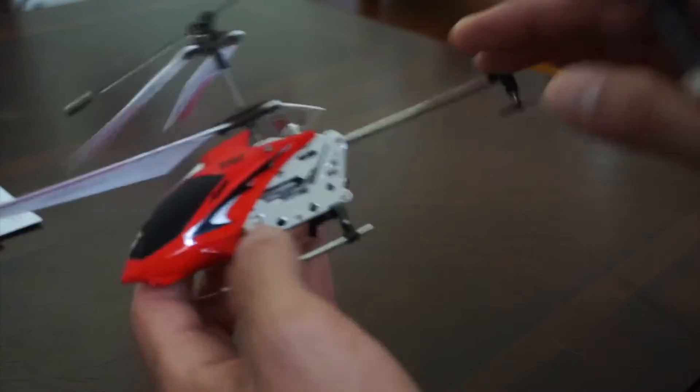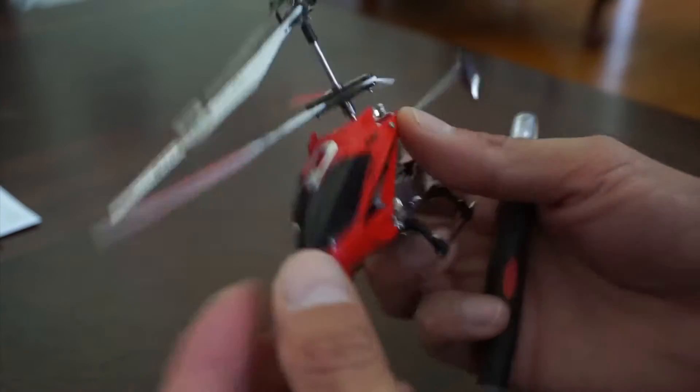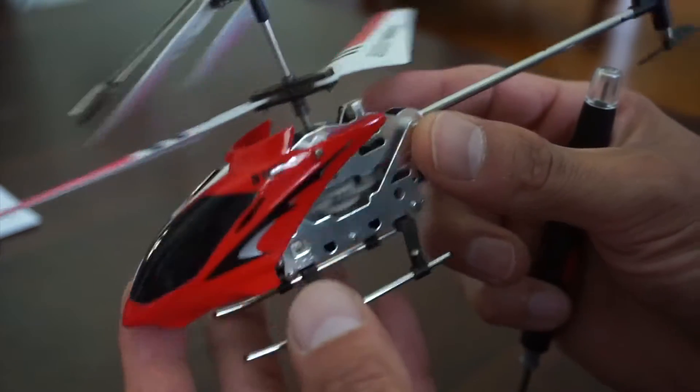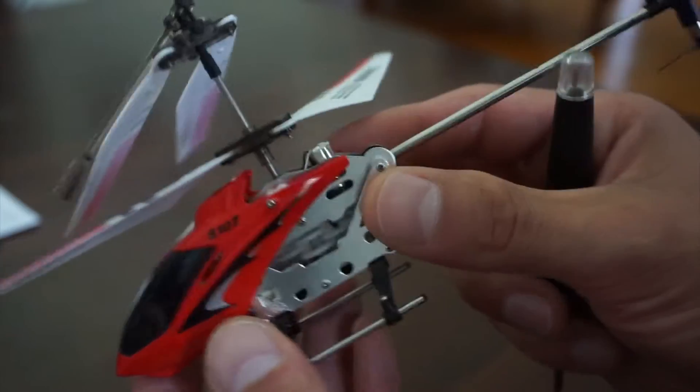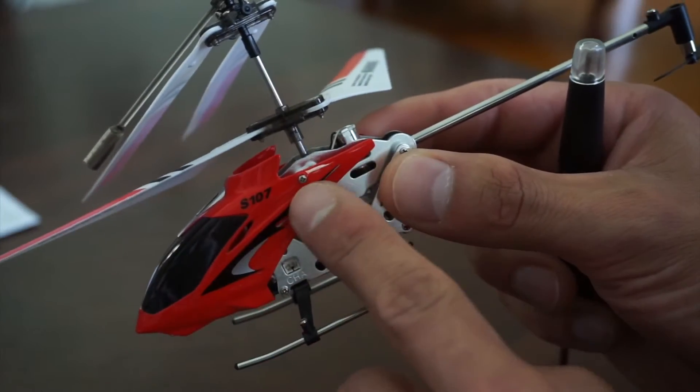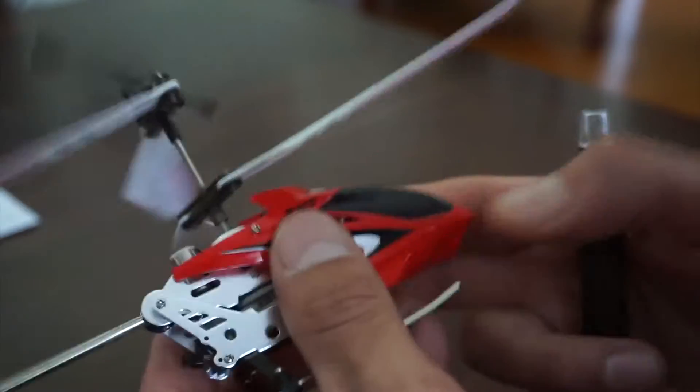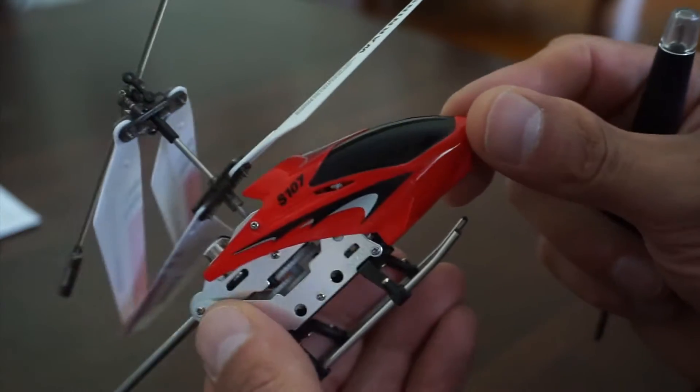The first thing I'm going to do is get to the existing battery inside the helicopter. To do that, all you need is your little precision screwdriver. There's two screws to remove the canopy, one here and one here. Let's just take those screws out.